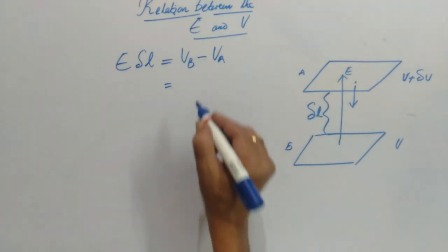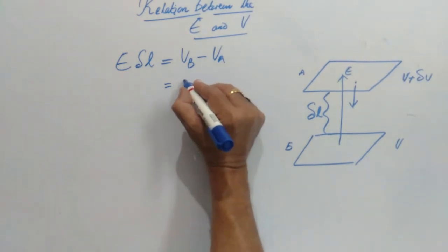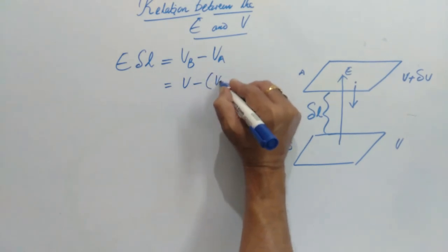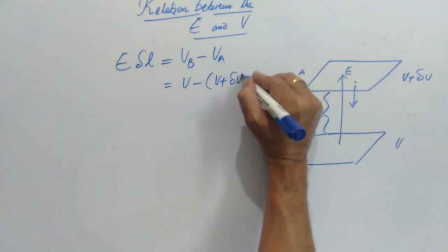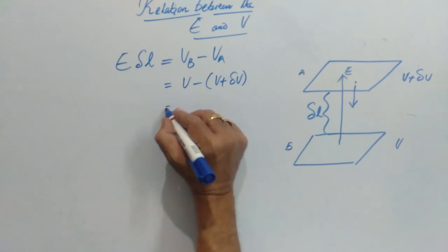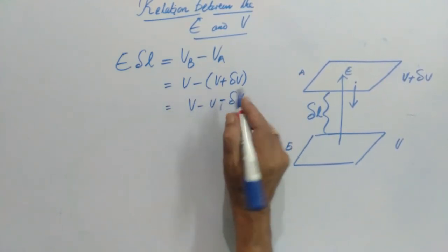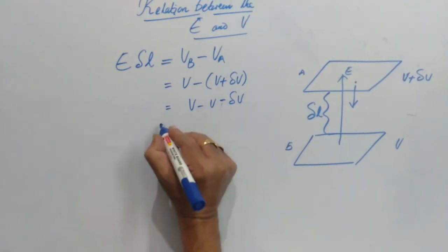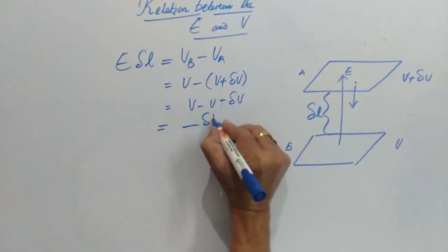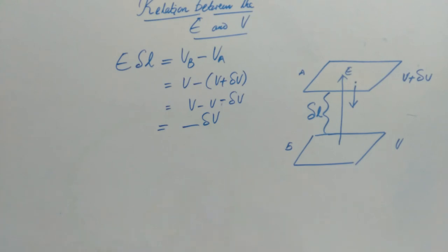Here, this is V minus V plus delta V. Now, V minus V minus delta V. The final result is minus delta V.